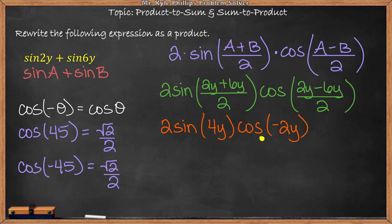Here, even though this is cosine of negative 2y, the negative is not going to affect the answer. So with cosine, this negative can go away. So I have 2 sine of 4y times cosine of 2y. This would be my expression rewritten.